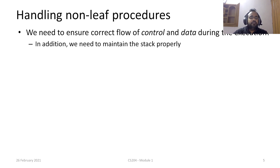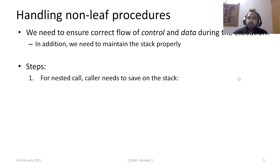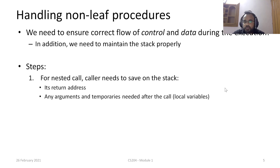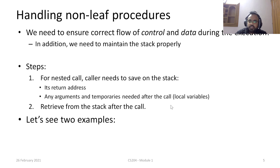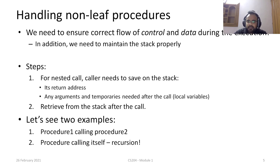In addition, we need to maintain the stack properly with additional care so that variables can be stored and retrieved correctly. For a nested call, the caller needs to save onto the stack its own return address, any arguments, and the temporaries it intends to use after the call — essentially the local variables of procedure one. Once control returns from procedure two, all these values need to be retrieved. To understand this, let's look at two examples: procedure one calling procedure two, and recursion.